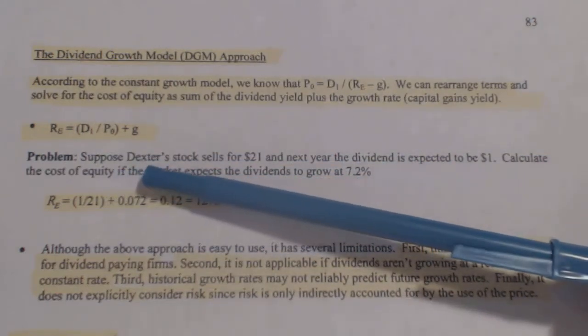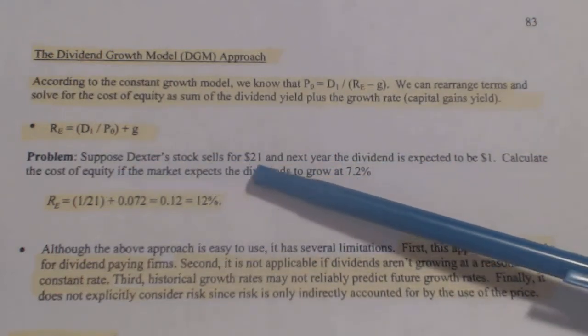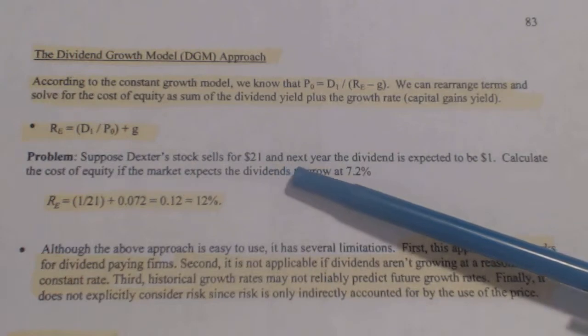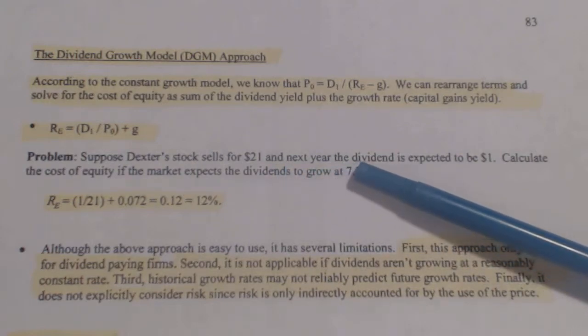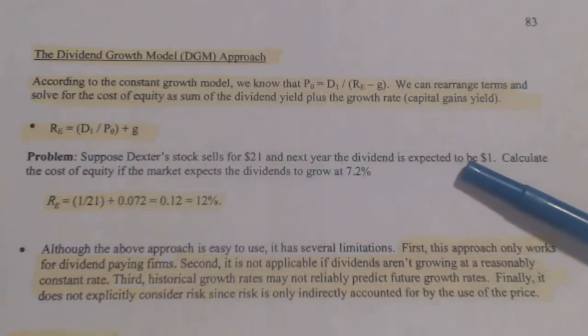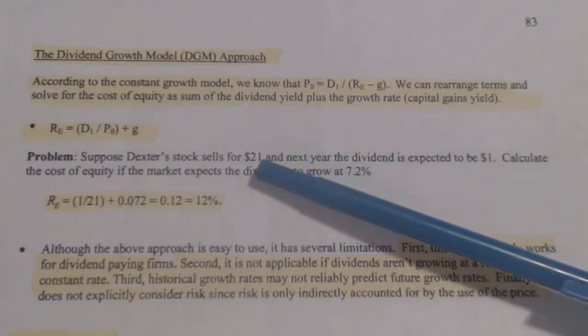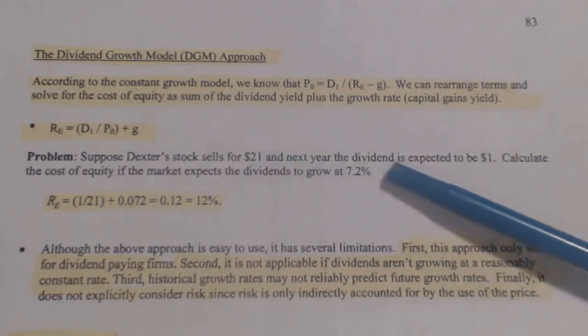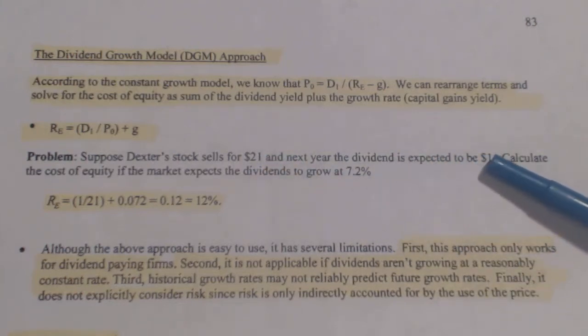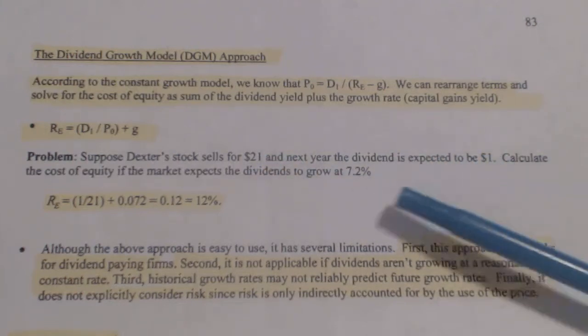Suppose Dexter's stock sells for $21 a share, and next year the dividend is expected to be $1. So $21 is P0, and $1 is D1.